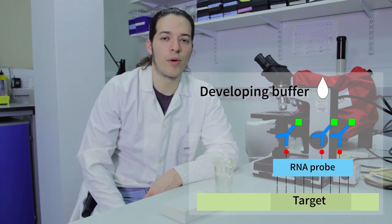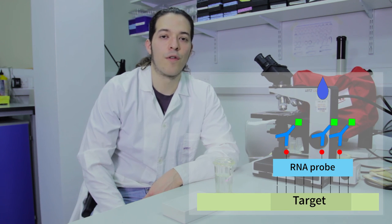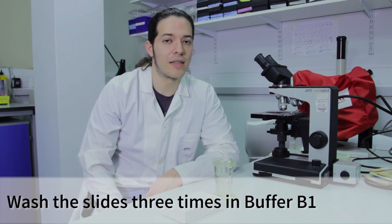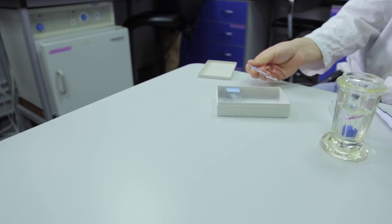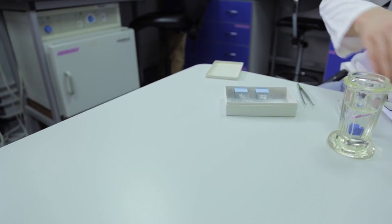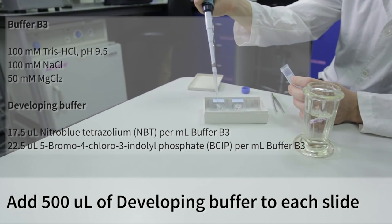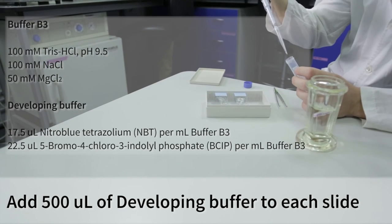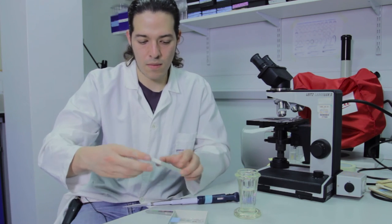During this last day, we will develop the signal. For this, we will need first to wash all the unbound antibodies to the slides. For this, we will use buffer B1 and wash the slides three times. After washing the slides, we add 500 microliters of developing buffer. I keep this in a dark container because the developing buffer is light sensitive.